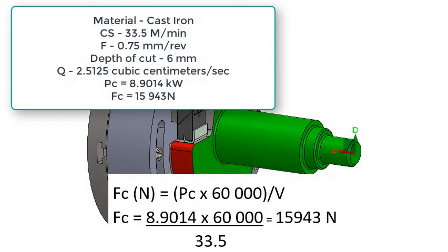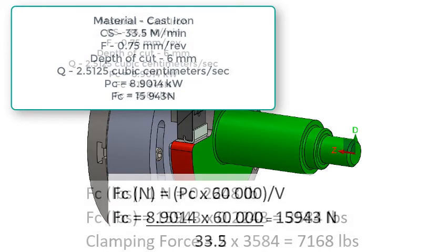Now that we know the power requirement, we can calculate the cutting force in newtons. Multiply 8.9014 kilowatts times 60,000 and divide by the cutting speed of 33.5 to get 15,943 newtons of cutting force.